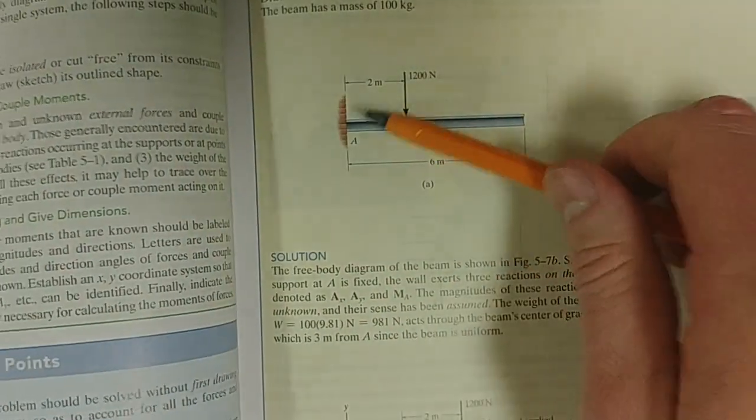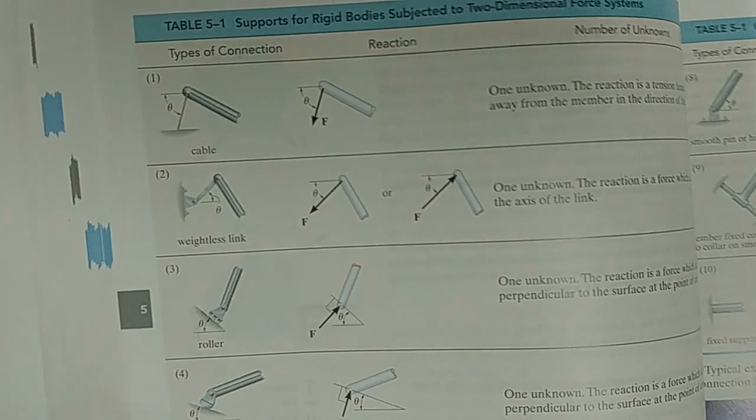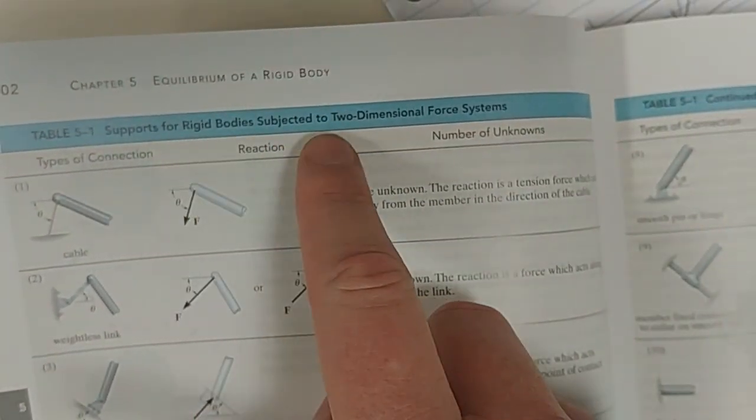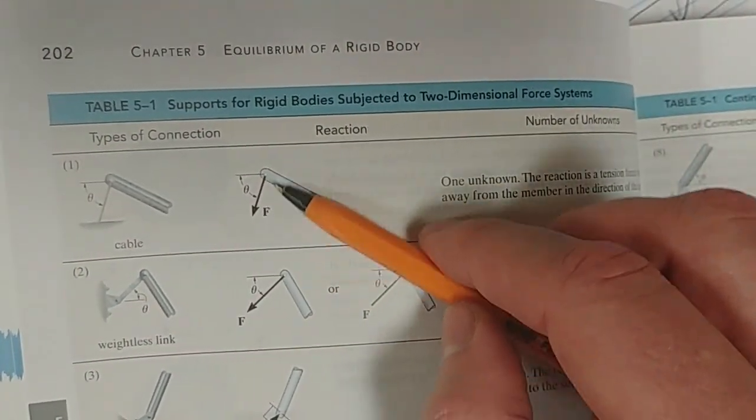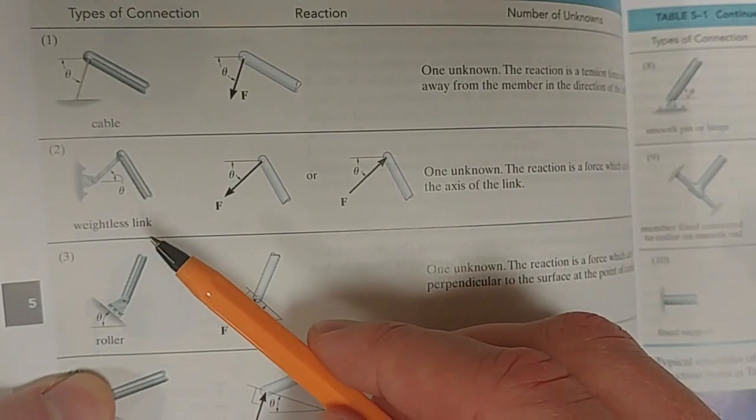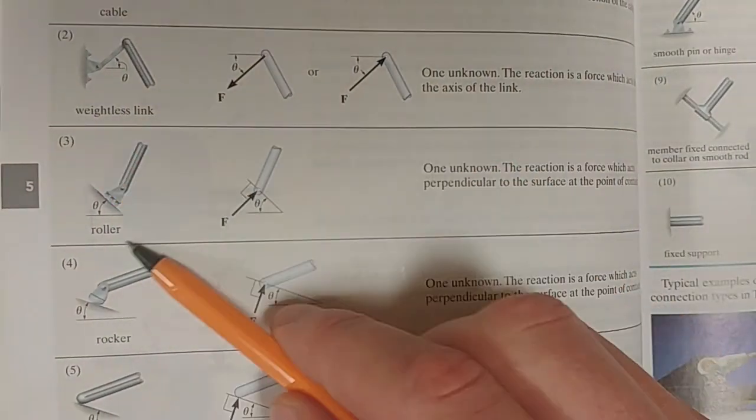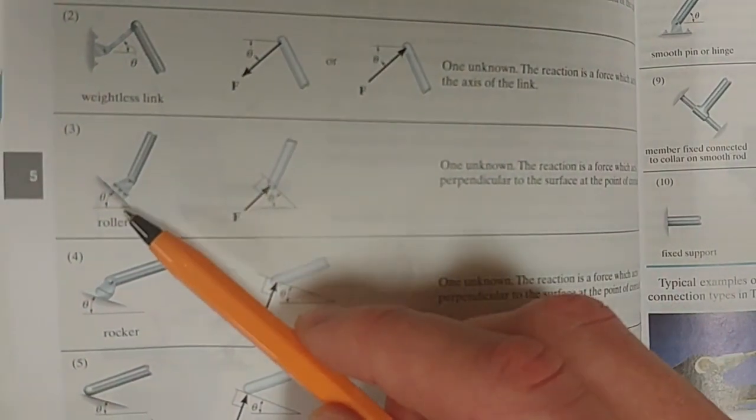So guys, based on this type of example, you need to understand how to replace all these connections. So these are supports for rigid bodies. How do I replace that? A cable, I replace it with a single force. How do I replace a weightless link? I replace it with a single force. A roller.